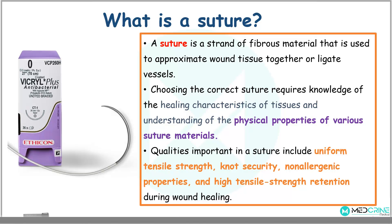In the selection of a correct suture material, you need knowledge of the healing characteristics of tissues and an understanding of the physical properties of various suture materials. The qualities that are important in a suture material include uniform tensile strength, knot security, non-allergenic properties, and a high tensile strength retention during wound healing.